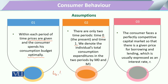We can denote them as t-not and t1. The individual has total consumption expenditure in these two time periods. If we apply the theory of full employment, whatever income the consumer has is utilized either for today, for the future, or for both of these two consumption periods. The third assumption tells us that the consumer faces a perfectly competitive capital market, and in a perfectly competitive capital market there is always a given price for borrowing and lending, which is usually expressed as an interest rate R.